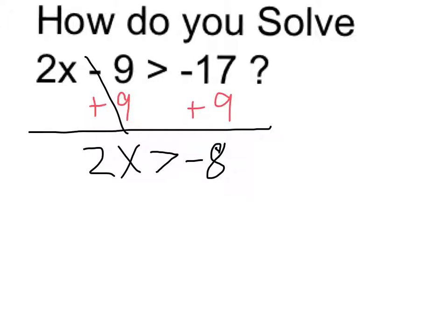So 2x must be greater than negative 8. 2 times some number is greater than negative 8, and if I divide both sides by 2, I can see that the number itself is going to have to be bigger than negative 4 in order for this to be true.